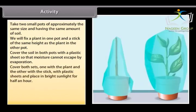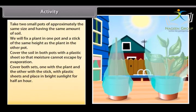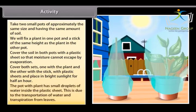Cover both sets, one with a plant and the other with a stick, with plastic sheets and place in bright sunlight for half an hour. The pot with plant has small droplets of water inside the plastic sheet. This is due to the transportation of water and transpiration from leaves.